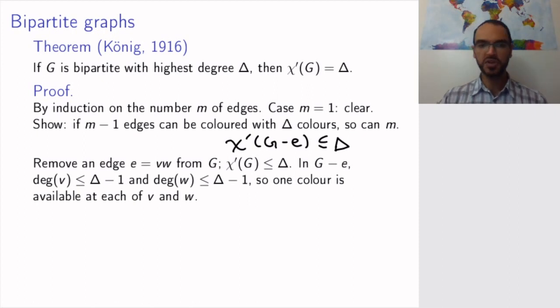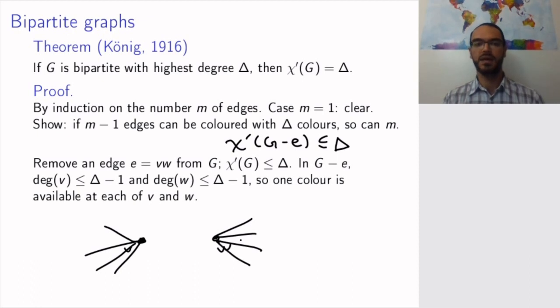The good news is that since we have decreased the degrees of v and w, we have one color available at each of v and w, meaning that the other edges going into v and w will all be colorable in at most Δ-1 colors. So there is one color available.